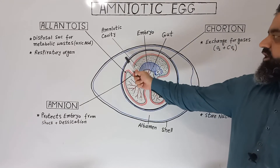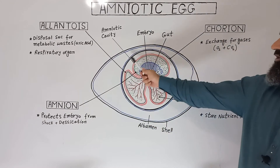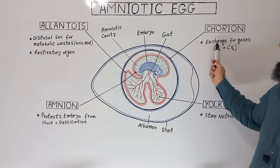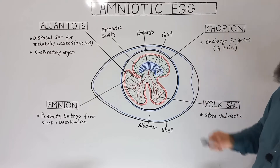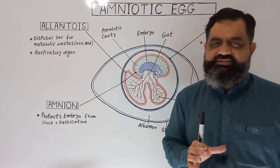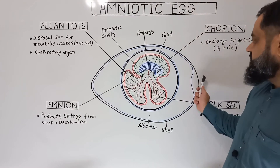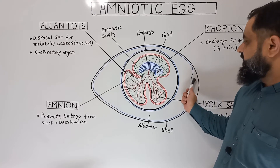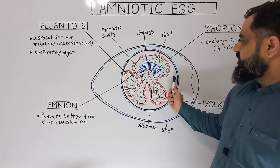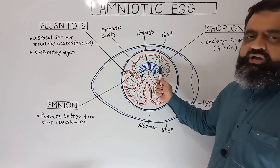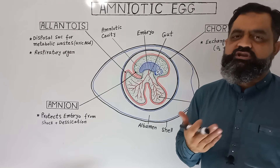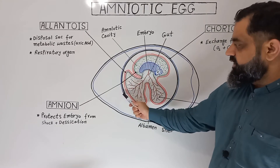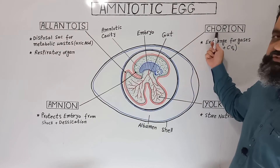The first and outermost layer inside the shell is known as the Chorion. The Chorion is a protective layer and is used for the exchange of gases — oxygen and CO2. Oxygen stored inside the air space in the egg diffuses through the Chorion and reaches the embryo; oxygen is absorbed and CO2 is released. This outermost layer, shown in the black and blue circle in the diagram, is the Chorion.